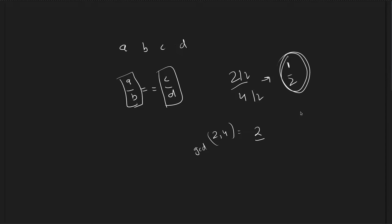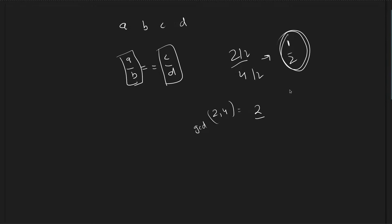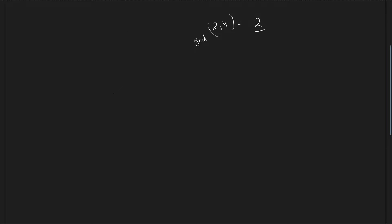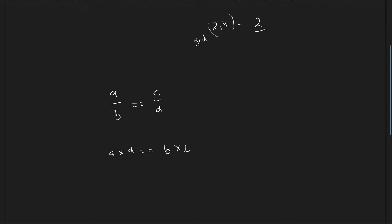The first step is to convert both fractions A/B and C/D into simplified fractions. We can write the equality condition as A multiplied by D equals B multiplied by C. At maximum, we need two steps, and we will discuss three cases: zero steps, one step, and two steps.